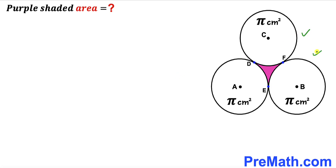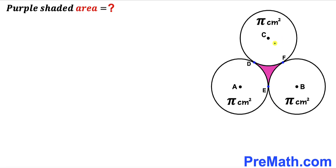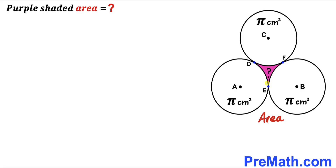In this video we have three identical circles tangent to each other, as shown in the given diagram, such that points D, E, and F are their points of tangency, resulting in this purple shaded region. Moreover, points A, B, and C are the centers for these circles, and the area has been given as pi centimeter square for each of these identical circles. Our task is to calculate the area of this purple shaded region.